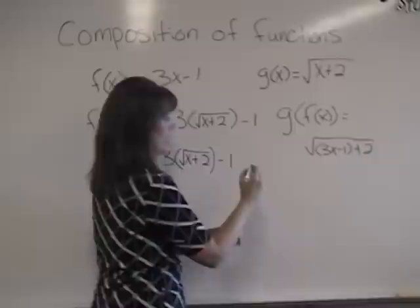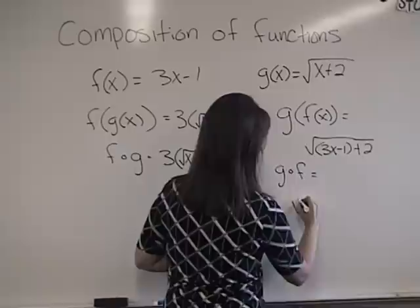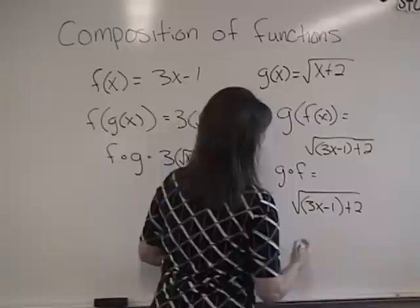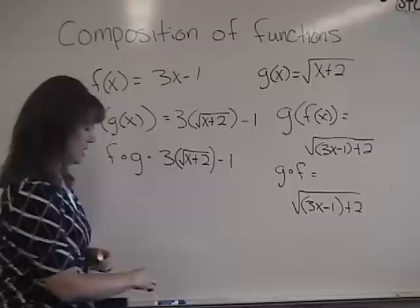So that is the composition of g of f of x. Another way we note that is goff. So it's the exact same thing. It is the square root of 3x minus 1 plus 2. So that is how we compose two functions together. Now I want to show you one more concept.